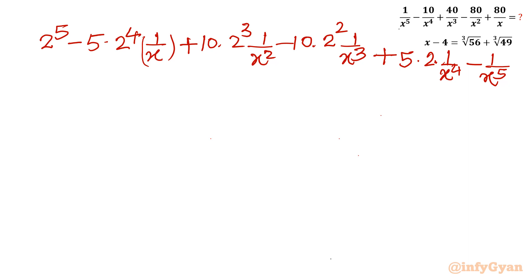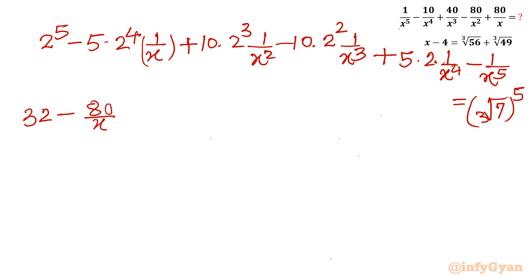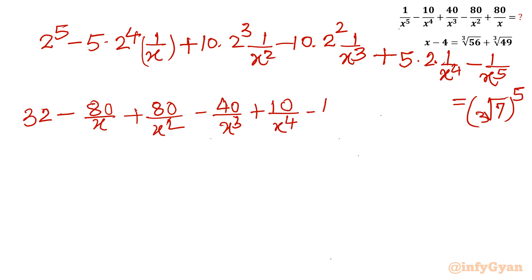Simplifying: 2 power 5 is 32; 5 times 2 power 4 is 5 times 16 equals 80; 10 times 2 cube is 80; 10 times 2 square is 40; and 5 times 2 is 10. So we get: 32 minus 80 over x plus 80 over x square minus 40 over x cube plus 10 over x power 4 minus 1 over x power 5. The right hand side is cube root of 7 whole power 5.